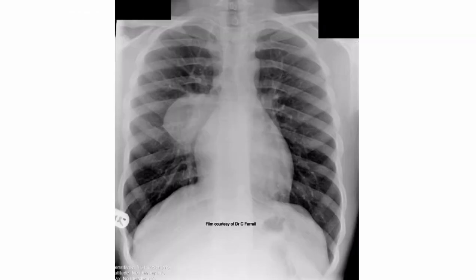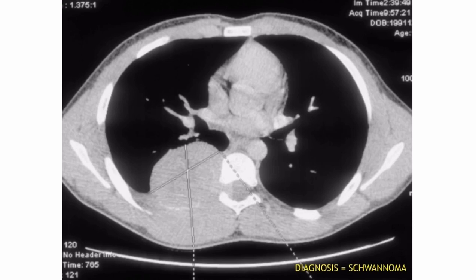Here's another chest X-ray where the hilar vessels are visible through the mass, as well as the right heart border, which means that the mass is in the posterior mediastinum. Again, we can see on the CT that it is a schwannoma.